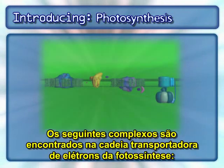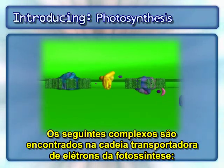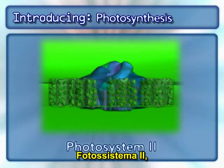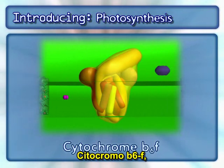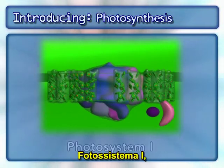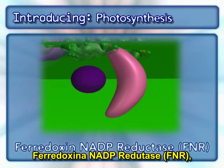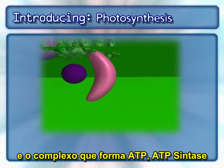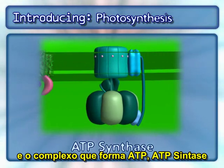The following complexes are found in the photosynthesis electron transport chain: Photosystem II, cytochrome B6F, Photosystem I, ferredoxin NADP reductase, and the complex that makes ATP, ATP synthase.